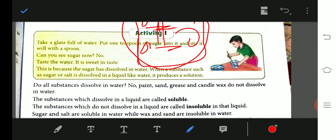We took a glass of water, added one spoon of sugar and dissolved it. Can you see sugar now? No. We cannot see the sugar now because the sugar has dissolved completely in water.